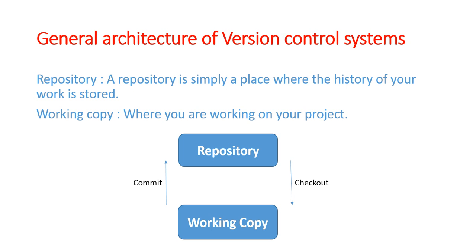यह repository में तभी store हुआ था जब हमने git commit किया था। git commit करने से पहले, आप उस project में normally काम कर रहे थे - that was your working copy। आप जहाँ पे work कर रहे हैं, जिस project में, वह आपकी working copy होती है। अगर आपको लगता है कि यह changes store होने चाहिए, तो हम उसे repository में commit कर देते हैं। इस diagram में यही show हो रहा है कि जब भी आपको किसी project पे काम करना है, तो आप उसे repository से check out करेंगे और जब काम कर लेते हैं, तो commit कर देते हैं।